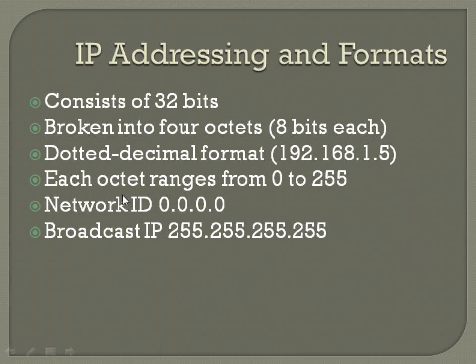Each octet ranges from 0 to 255. The network ID is going to be 0.0.0.0, and the broadcast IP is 255.255.255.255. And that's going to be across the board — even when you break down smaller subnets, when we start to get into VLSM, Variable Link Subnet Masks, the first IP address in that range is going to be the network address and the last one is going to be the broadcast address.